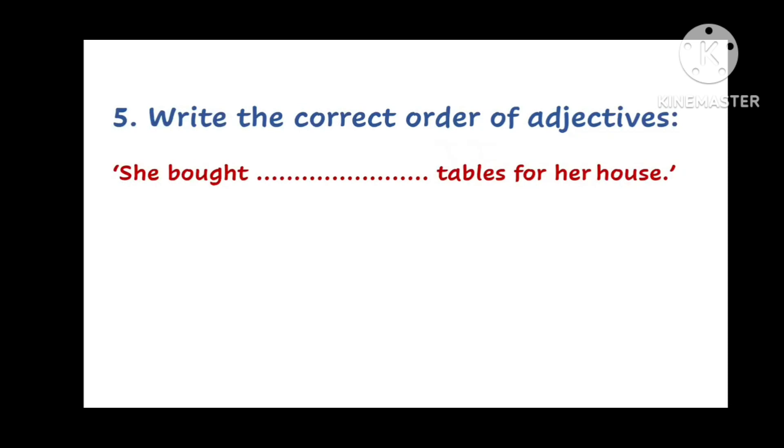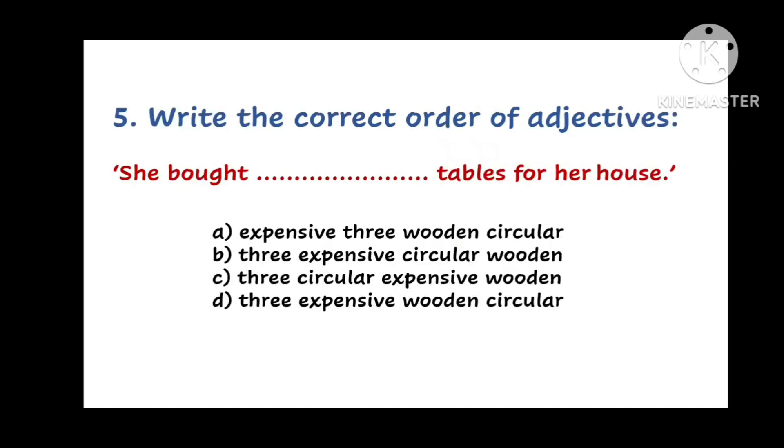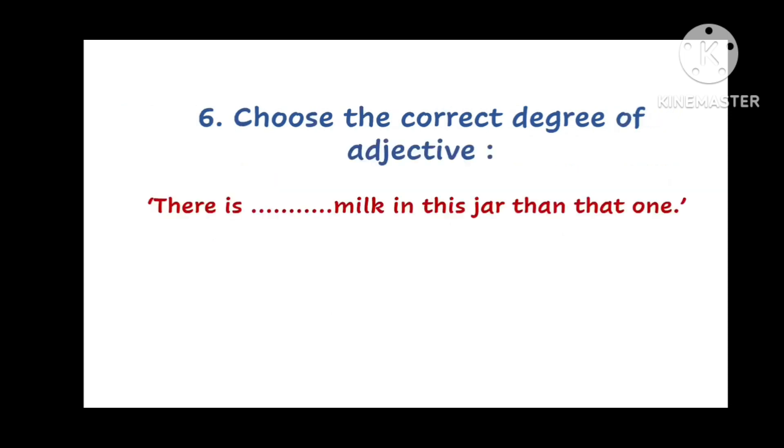Next question. Write the correct order of adjectives. She bought dash tables for her house. And the options are A. Expensive three wooden circular. B. Three expensive circular wooden. C. Three circular expensive wooden. Or D. Three expensive wooden circular. Which is the correct order of adjectives?